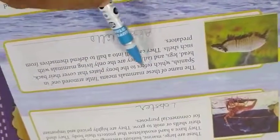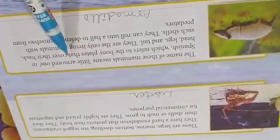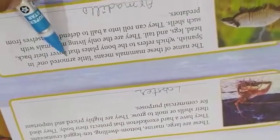The name of these mammals means little armored one in Spanish, which refers to the bony plates that cover their back, head, legs and tail. They are the only living mammals with such shells. They can roll into a ball to defend themselves from predators.